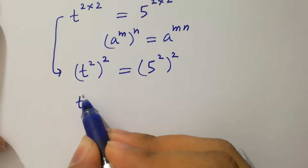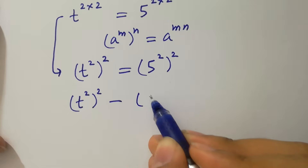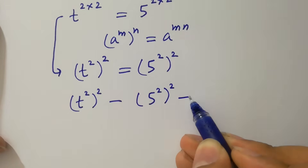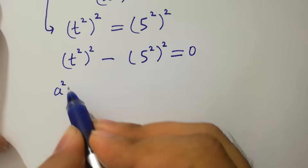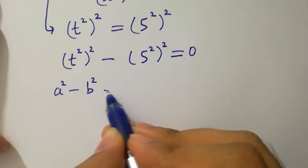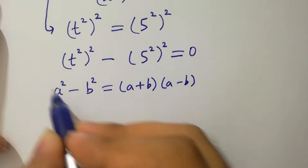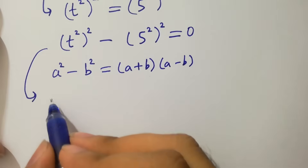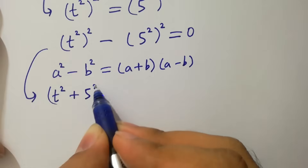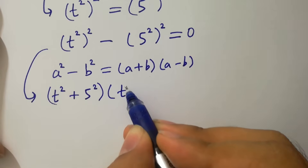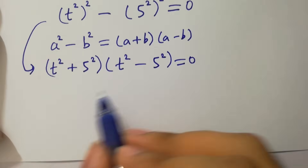This can be written as t squared to the power 2 minus 5 squared to the whole power 2 equal to 0. By this we use the formula a squared minus b squared which equals a plus b times a minus b. We have here t squared plus 5 squared times t squared minus 5 squared equal to 0, so we have two cases.